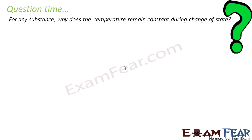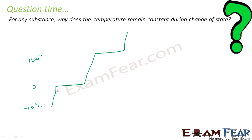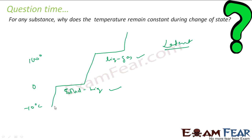Why does temperature remain constant during a change of state? Looking at the heating graph: temperature increases, then stays constant at 0°C (solid to liquid), then increases again, then stays constant at 100°C (liquid to gas). During these constant temperature periods — called latent heat of fusion and latent heat of vaporization — the heat energy is being used entirely to change the state of the substance rather than raise the temperature.